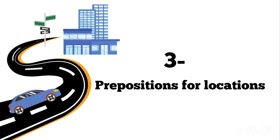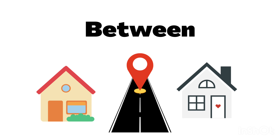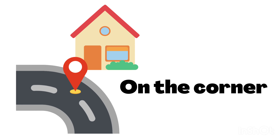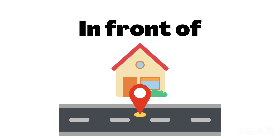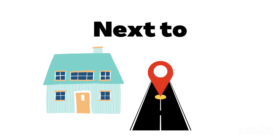Now it's time for some fabulous prepositions you can use to give directions. The first one is between. The second one is on the corner — a corner is a place like an edge where two different sides meet. The third one is in front of. Then we have behind. And the last but not least is next to.